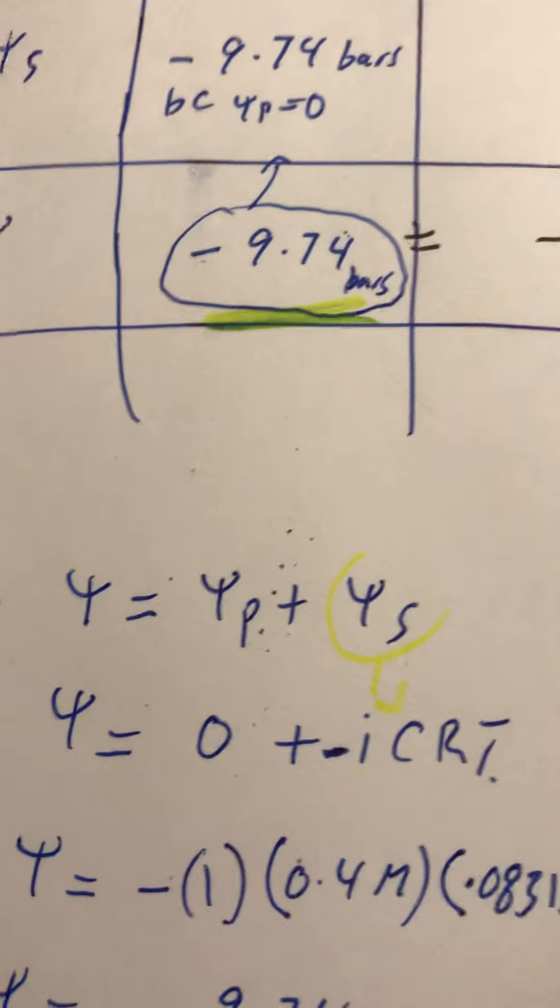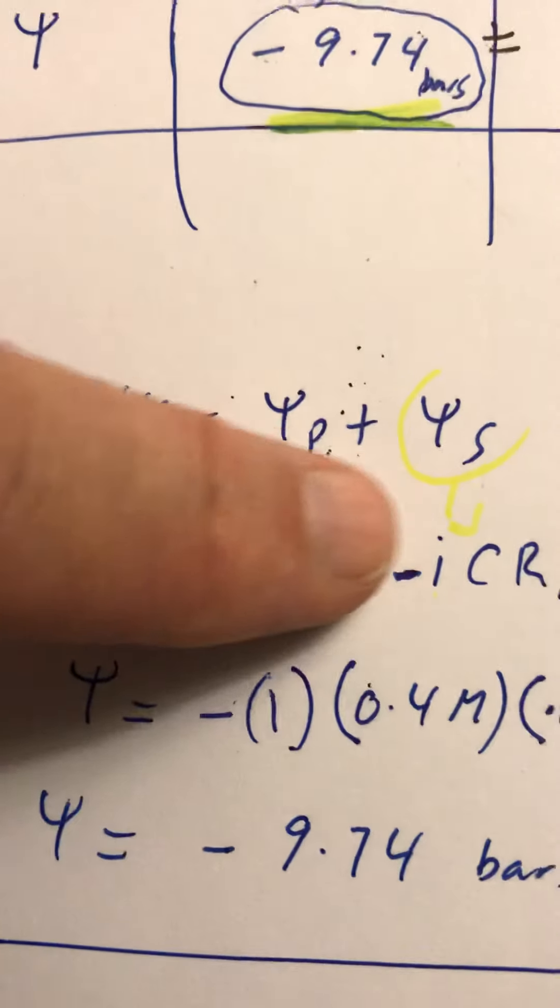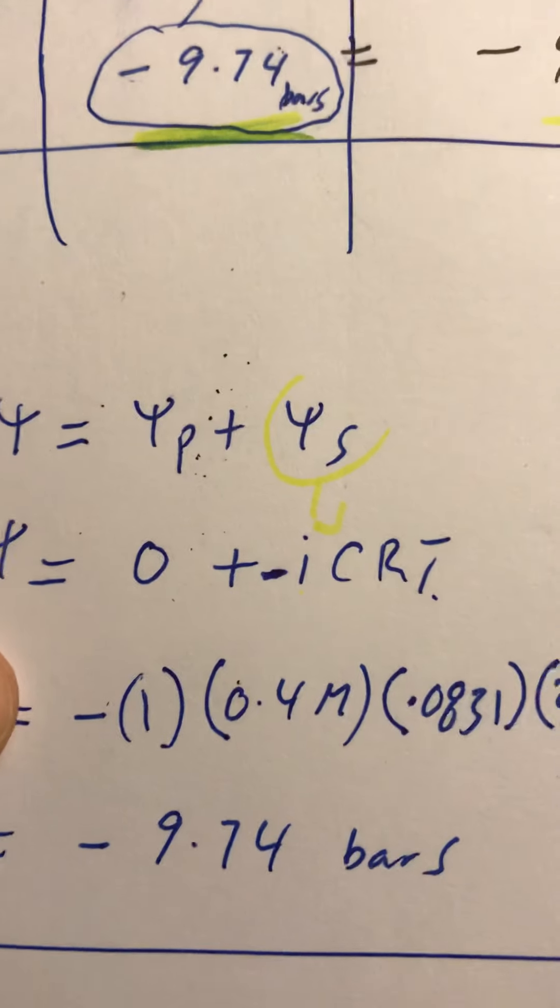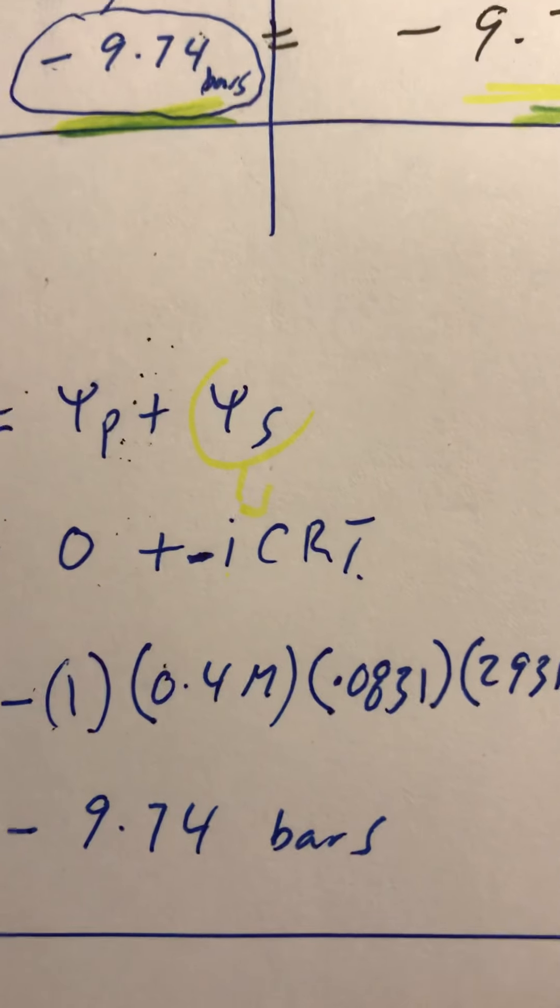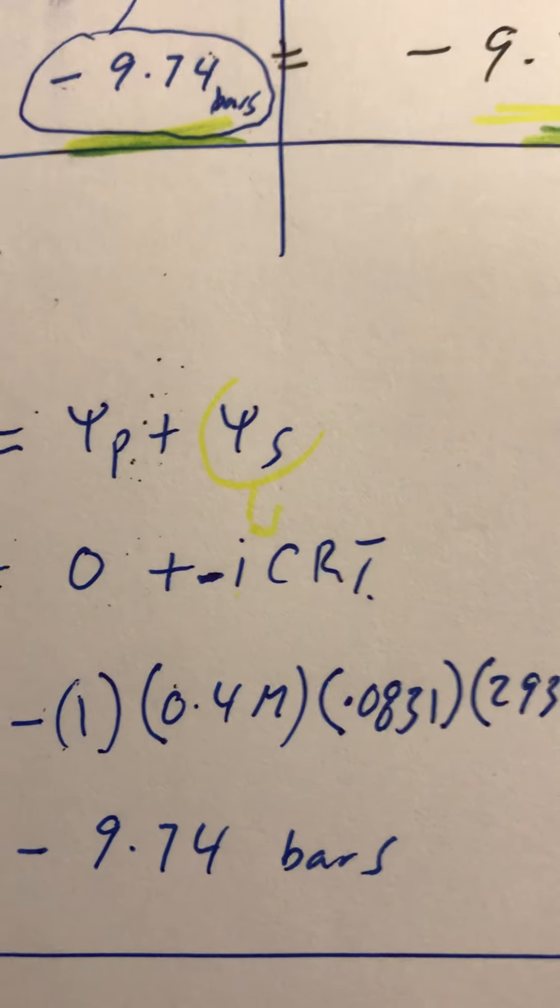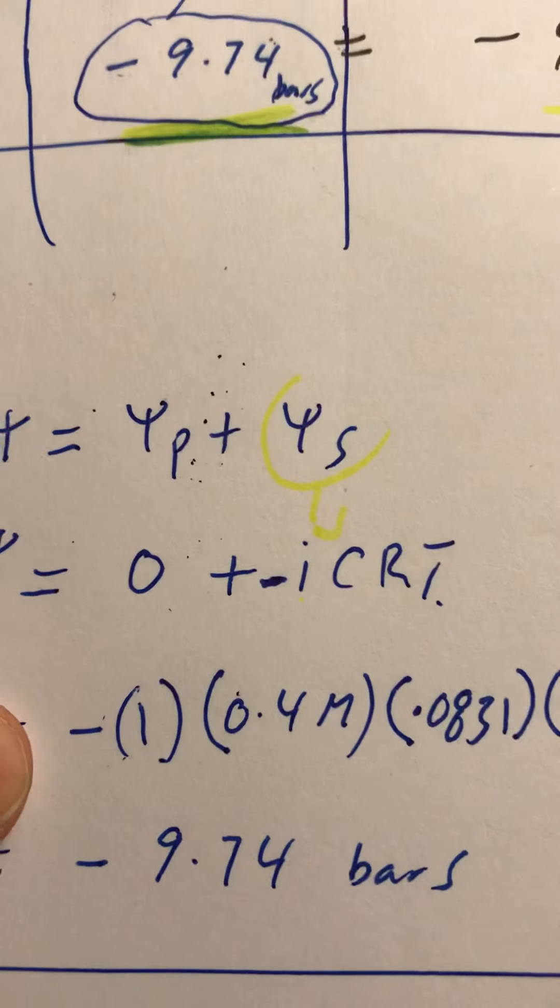I figure out psi. I plug in the numbers. Ionization is one for sucrose because it doesn't ionize. If it was sodium chloride it would be two because it ionizes into sodium and chlorine, but sucrose does not. It stays a sugar in solution, so the ionization is one, it's one particle in solution.